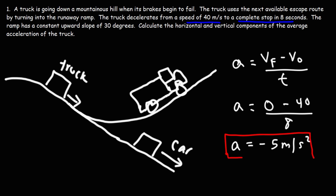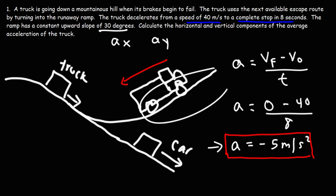Now we need to use this to get the components of the acceleration — the x component and the y component. Right now gravity is slowing the truck down, causing it to decelerate. To find the x and y components of any vector, all you need is the magnitude of that vector and the angle. So let's draw this as a triangle.